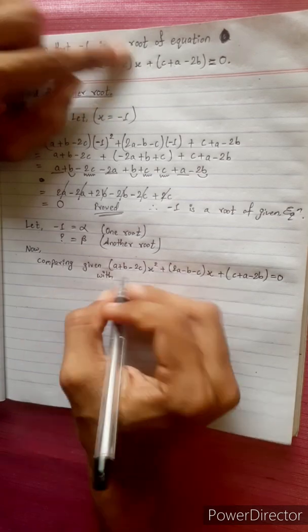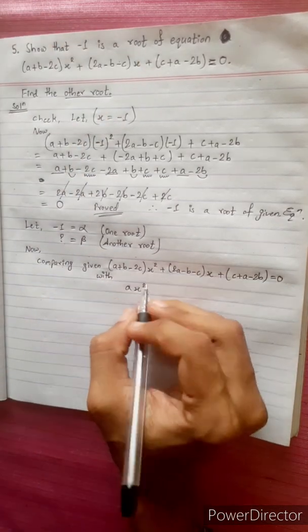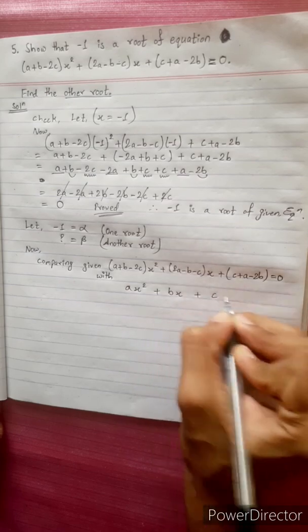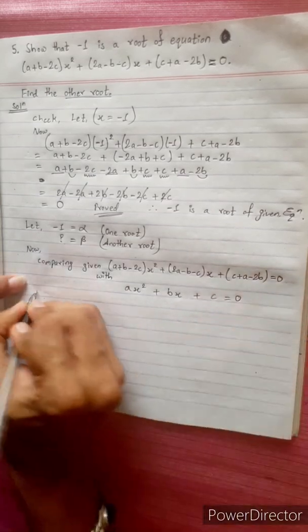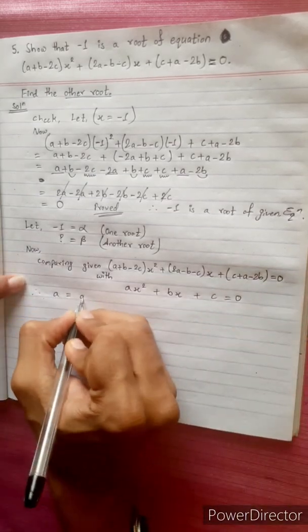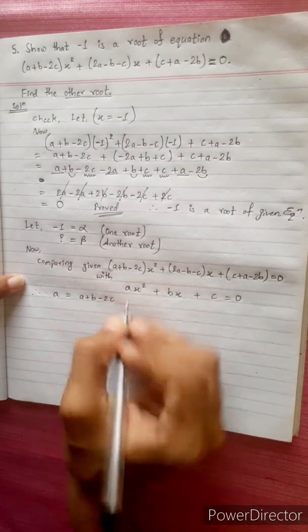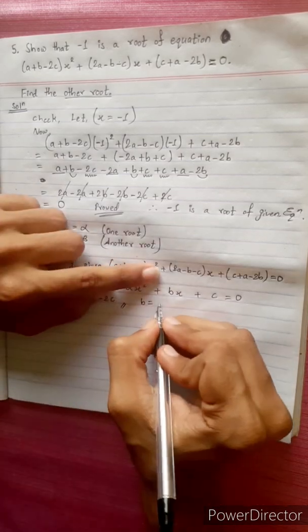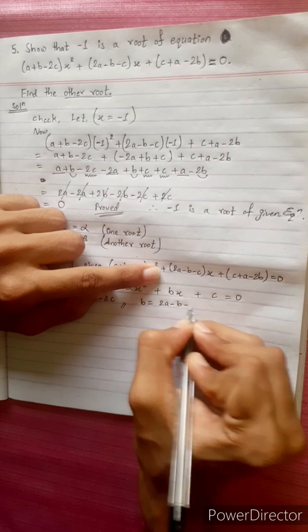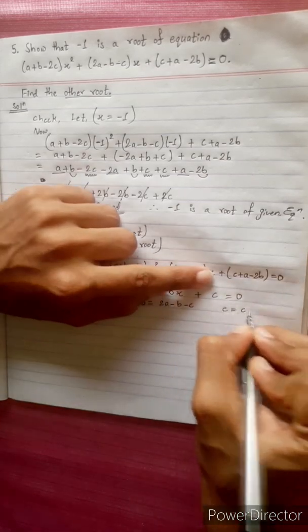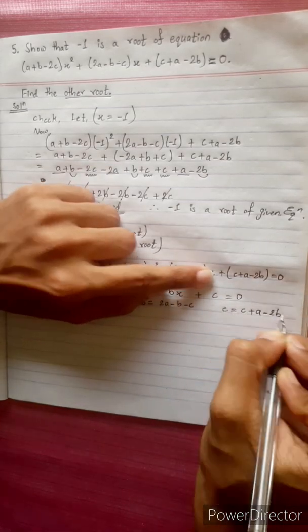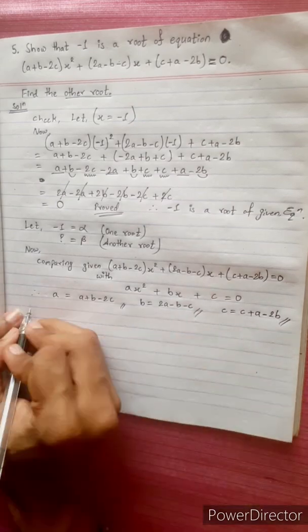Kya sa ma compare garu haani. Ax square plus. Bx plus C equal to 0. Sama compare garu haani. Tha cha cha cha. Amada value c ba ya hamsa. A ko value ayo. A plus B minus 2c. B ko value ayo. Yo. 2a minus b minus c. C ko value ayo. C plus A minus 2b. Yo yo yo. Yo tini te value amla ta hai sha. Kya ma ta hai sha.